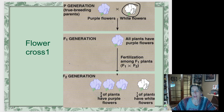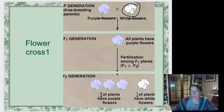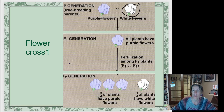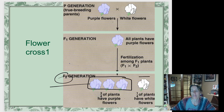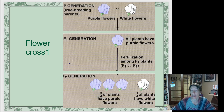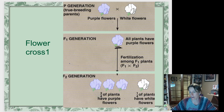This purple-flowered parent and this white-flowered parent had made peas. Each pea grew up into its own plant. They were all purple-flowered, and Mendel bred one purple-flowered offspring with another and saw what happened in the F2. What Mendel discovered was a three-to-one ratio: three purple-flowered plants for every one white-flowered plant. White flowers popped back out — somehow the ability to be white was hidden inside these plants.